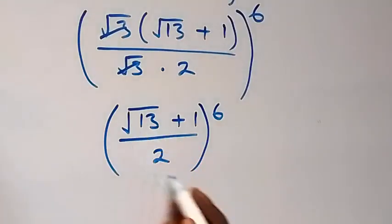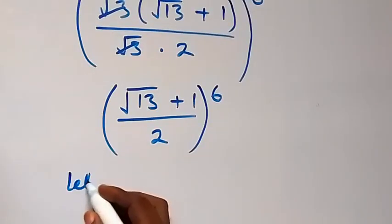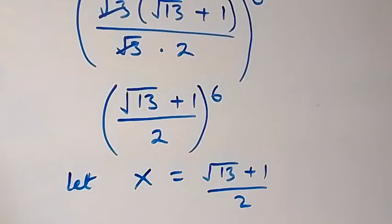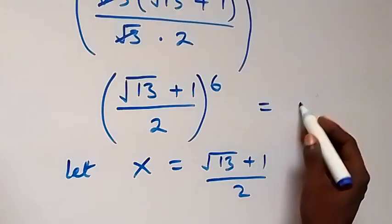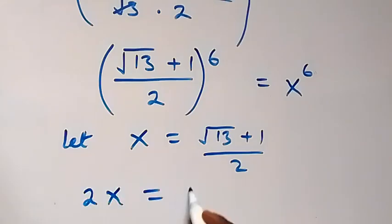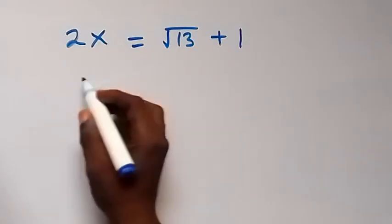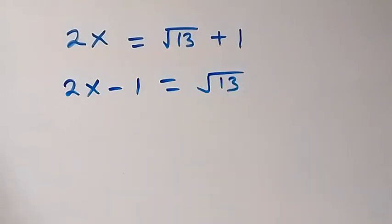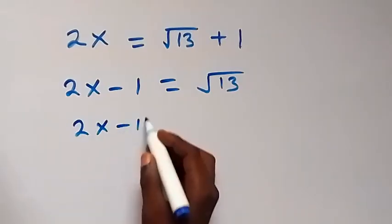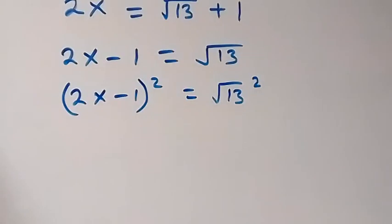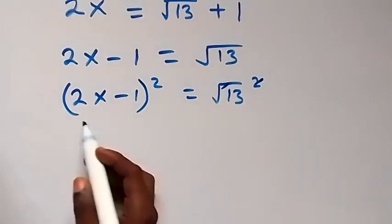From here, let's represent what is inside with letter x. So let x equal root 13 plus 1 over 2. What we are finding is now the same as x raised to power 6. When we cross-multiply, this becomes 2x equals root 13 plus 1. Taking 1 to this side, we have 2x minus 1 equals root 13. From here we can square both sides: (2x minus 1) squared equals root 13 squared.